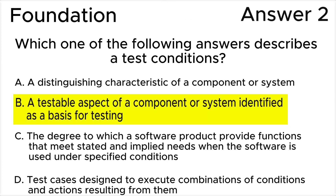The correct answer is B: a testable aspect of a component or system identified as a basis for testing. This answer is based on the definition of test conditions in the ISTQB glossary. Let's see where the rest of the answers are wrong.